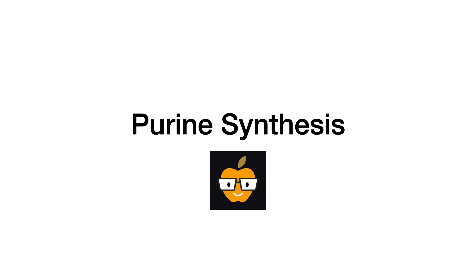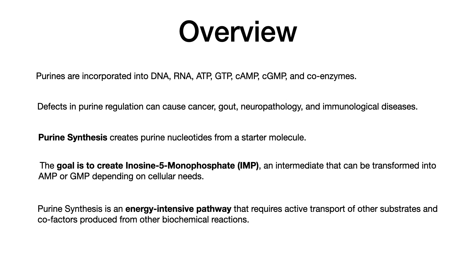In this biochemistry video, we will be talking about purine synthesis, sometimes referred to as de novo purine synthesis. Purines are substances that are incorporated into DNA, RNA, ATP, GTP, cyclic AMP, cGMP, and coenzymes — in other words, they're very important.